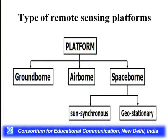Types of remote sensing platforms: we have ground-based, airborne, and spaceborne. Spaceborne satellites are of two types: sun-synchronous and geostationary. All remote sensing satellites are generally sun-synchronous, while weather satellites are generally geostationary.